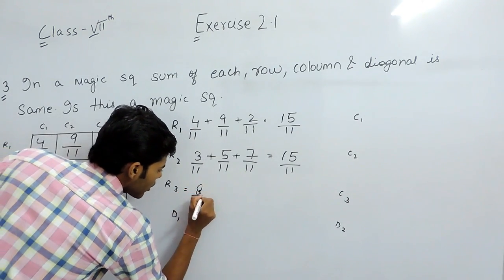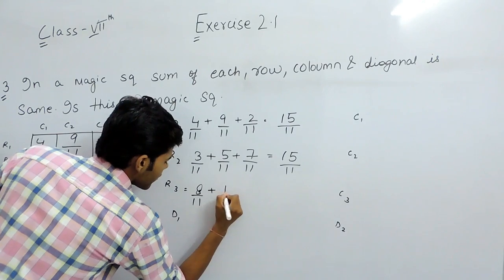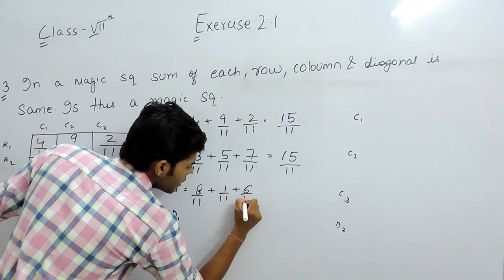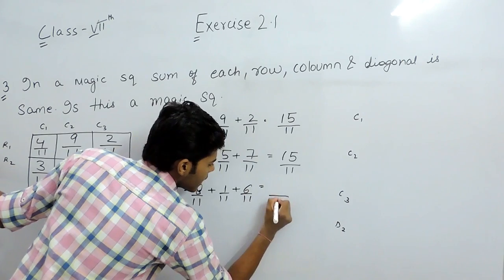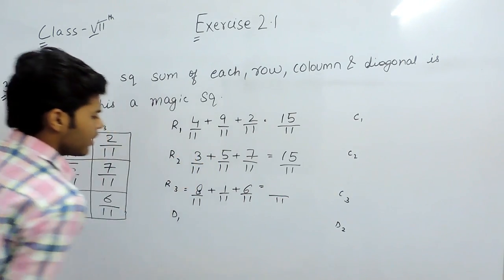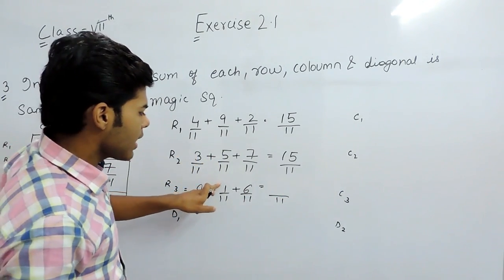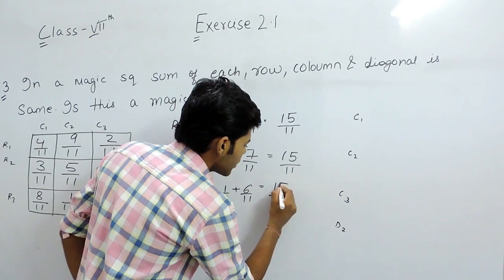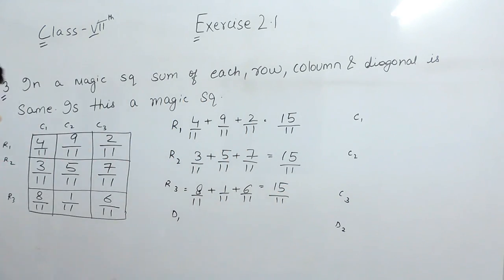Now we will check the third row: 8 upon 11 plus 1 upon 11 plus 6 upon 11. Again the LCM will be 11. 8 plus 1 is 9 and 9 plus 6 is 15. So the third row sum is 15 upon 11.